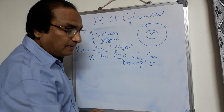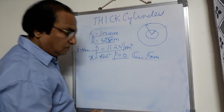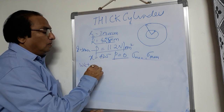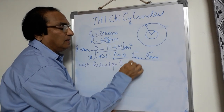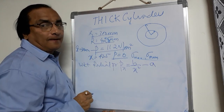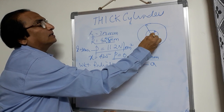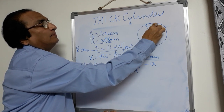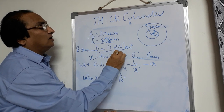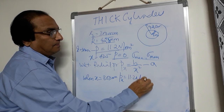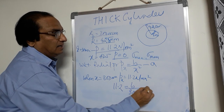Now let's find the value of A and B. We know that radial pressure PX at any distance X is given by B/X² − A. When X is equal to 300 mm (inner face), PX equals 11.2 Newton per mm square. So substituting: 11.2 = B/300² − A. Call this equation one. Similarly, when on the outer face, when R is equal to 425 mm, the radial pressure will be zero, giving: 0 = B/425² − A. This is the second equation.